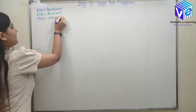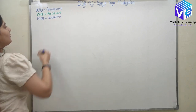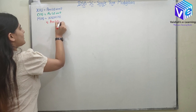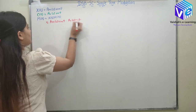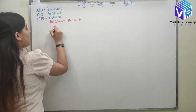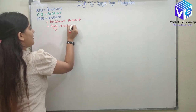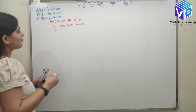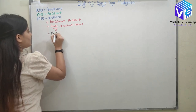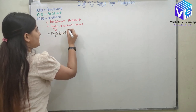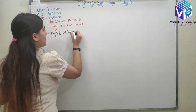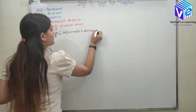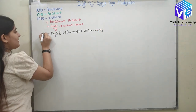So m(t) = x(t)·c(t) = Am·cos(ωm·t) × Ac·cos(ωc·t). I can write this as (Am·Ac)/2 · 2cos(ωm·t)·cos(ωc·t). Applying the identity 2cosA·cosB = cos(A+B) + cos(A−B), m(t) becomes (Am·Ac)/2 · [cos(ωc+ωm)t + cos(ωc−ωm)t].